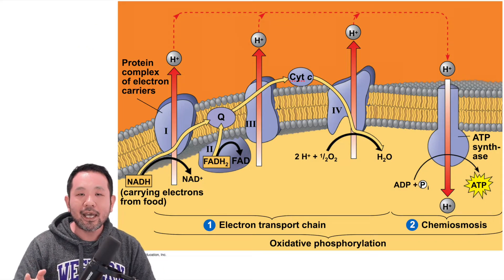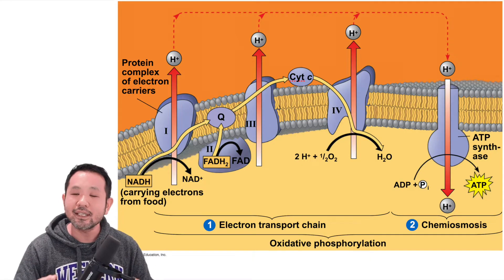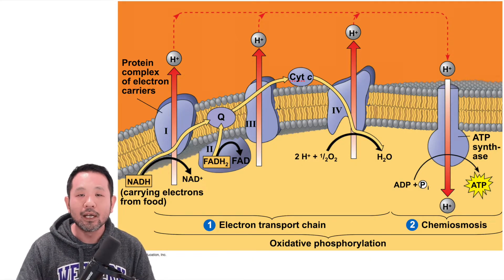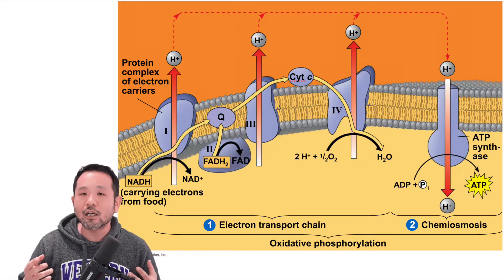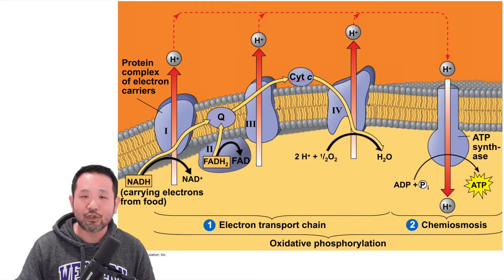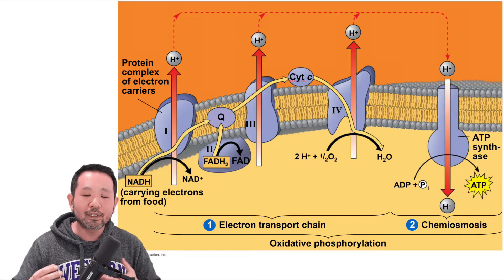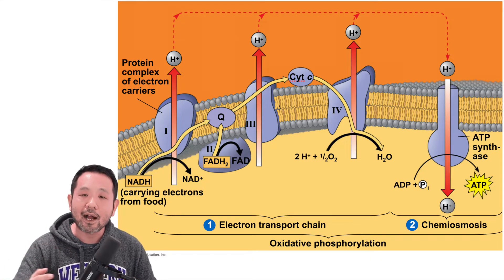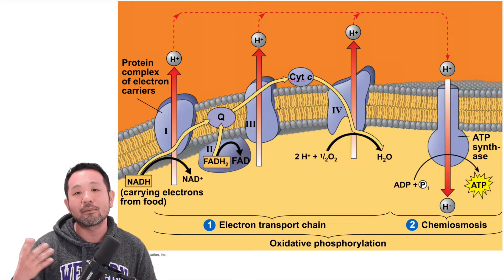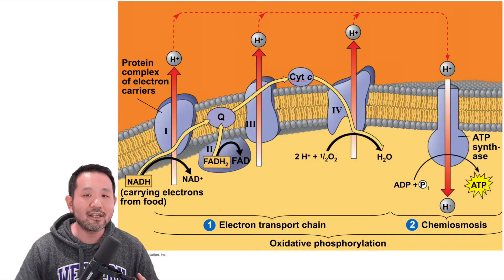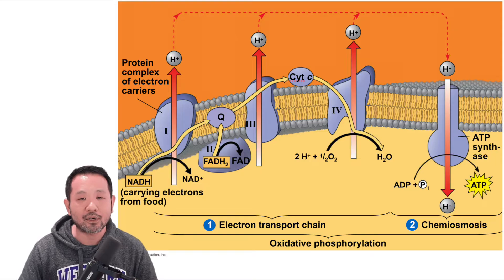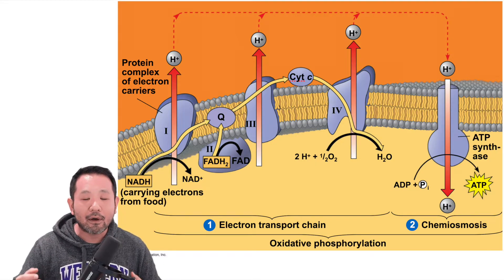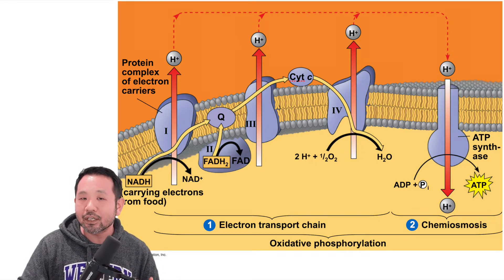NADH and FADH2 are carrying highly energetic electrons. These electrons can do work — very specific transport work. Remember active transport from Unit 2? That's the action of moving materials from an area of low concentration to an area of higher concentration utilizing energy. That energy was typically ATP, but it could also be these highly energetic electrons. NADH is able to take those highly energetic electrons and drop them off at protein complex one, while FADH2 drops off electrons at protein complex two.